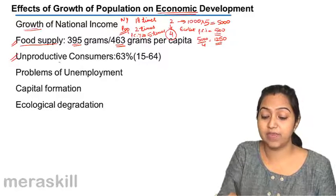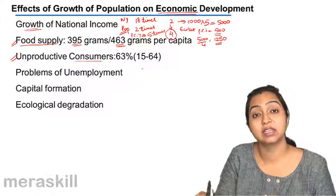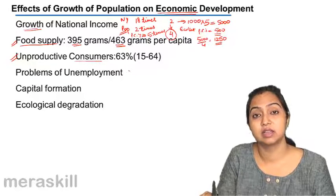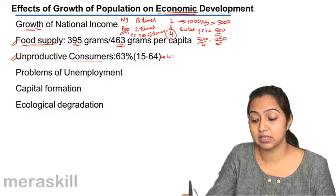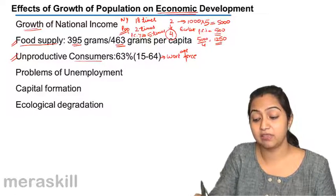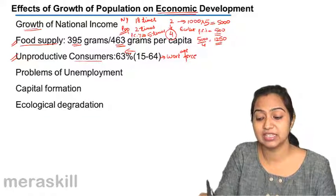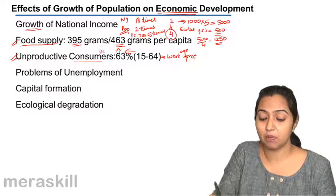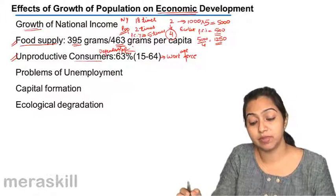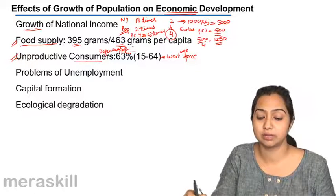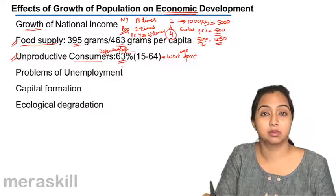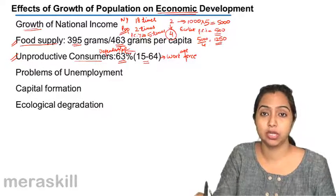Now the next problem is that unproductive population also increases rapidly when population grows at a fast pace. By unproductive population we mean children and senior citizens. People in the age group of 15 to 64 comprise our workforce — they are in the working-age population. If the population is increasing rapidly, it means children less than 15 years will be more, which means dependent or unproductive consumers will be more, and it will be a burden on the productive community. At the moment, 63% of the population is in this workforce, and this is what we should use in a proper manner.